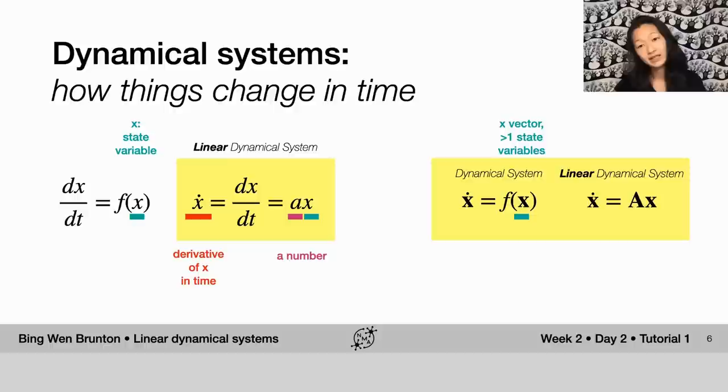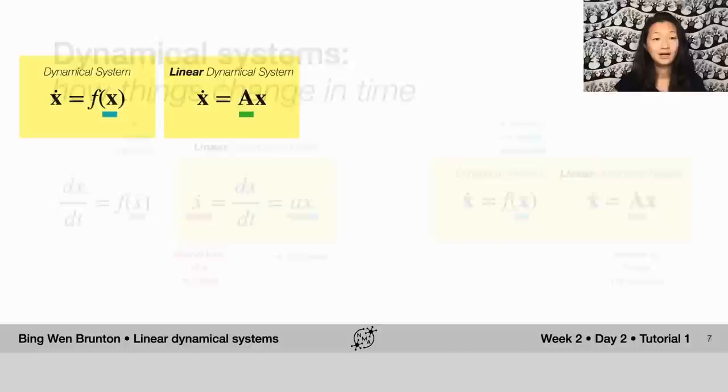And if this is a linear, higher dimensional dynamical system, then we have, instead of a number a, we have a matrix bold A, which is something that tells us about all of the linear dynamics that happens in the system.